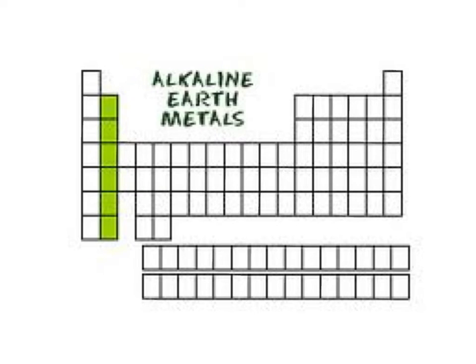The second family of the periodic table is called the alkaline earth metals. Alkaline earth metals, as you maybe can guess, have two electrons in their outer shell, so they have two valence electrons. Alkaline earth metals are reactive, but not as reactive as group one. They are also metals. They contain all of the properties of metals that we will discuss towards the end of this video.